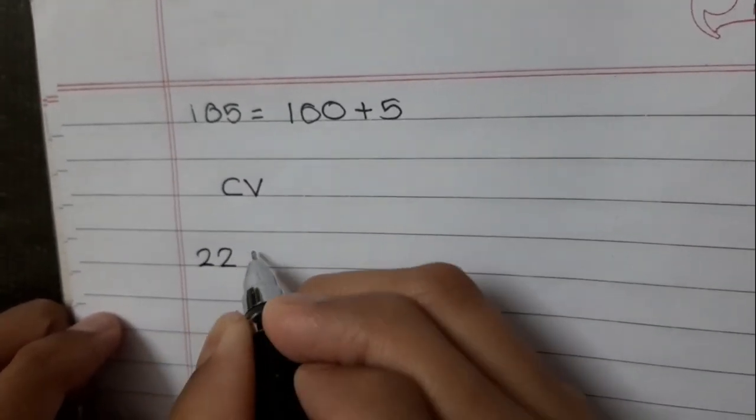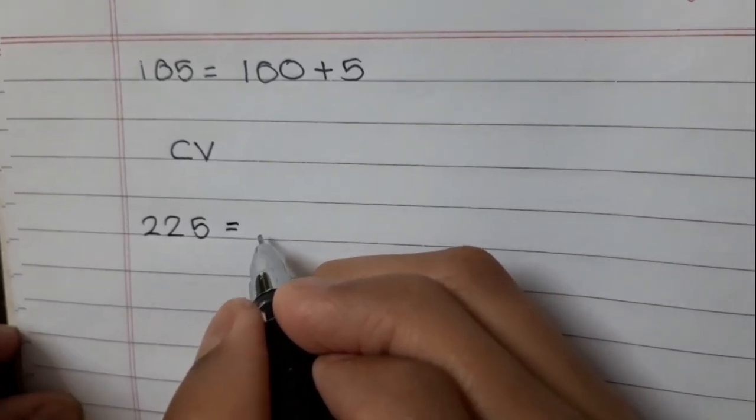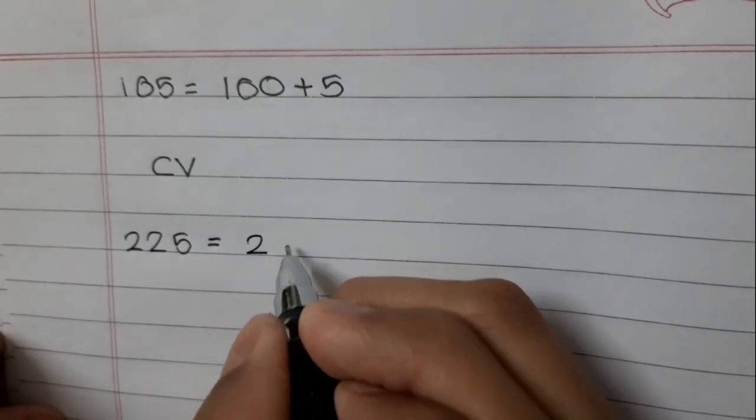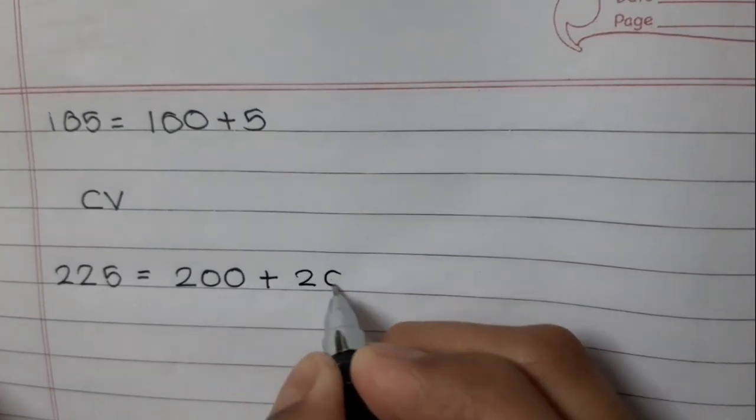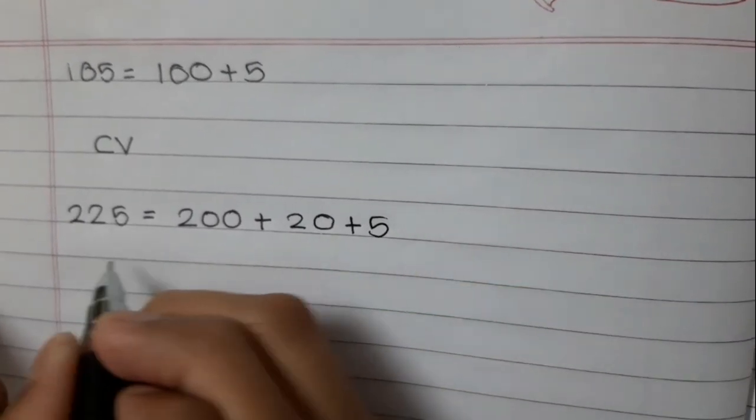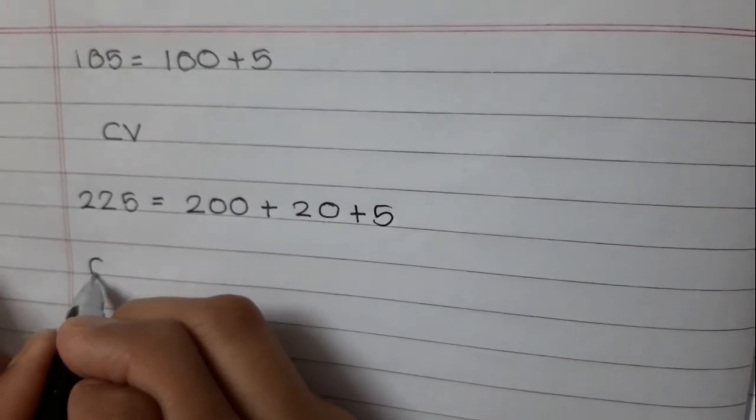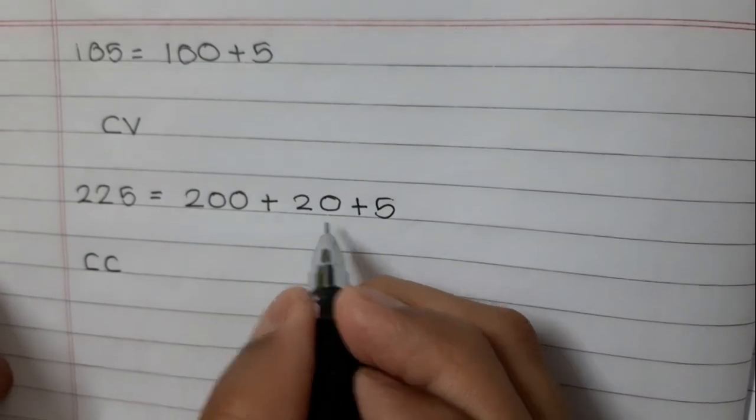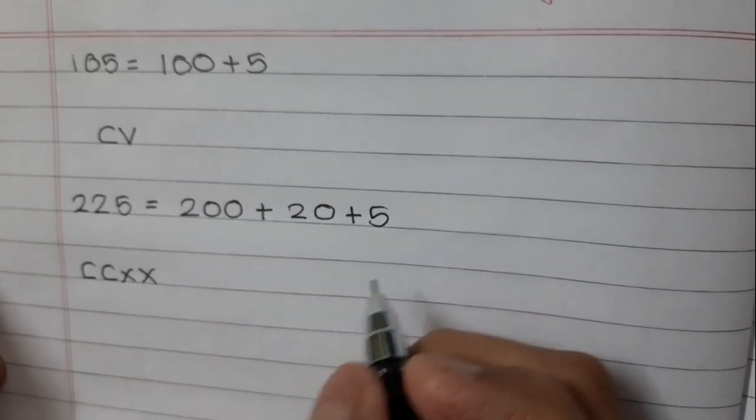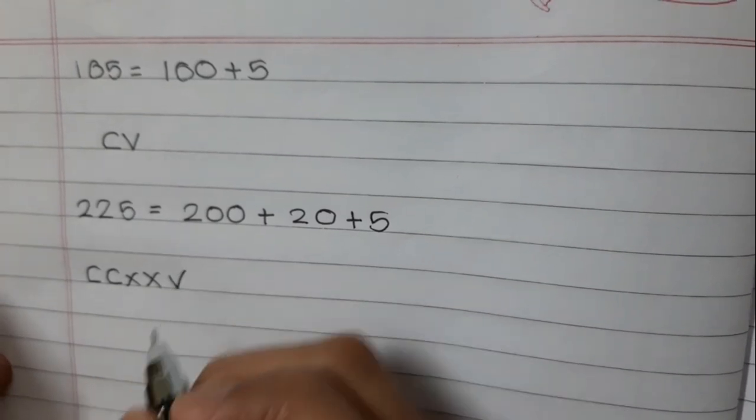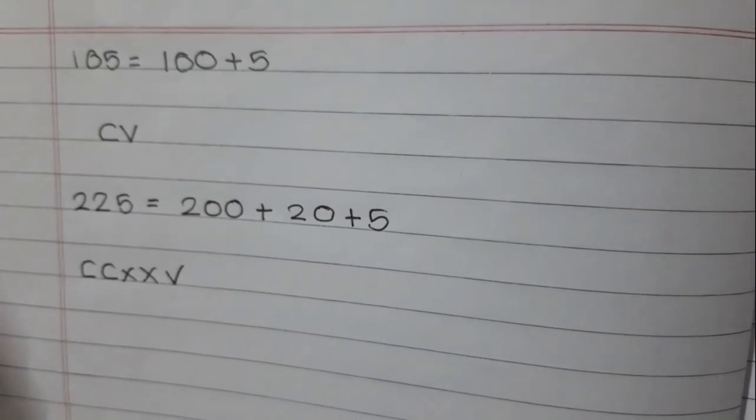Example 2: 225. 225 equals 200 plus 20 plus 5. 200 is double C, 20 is double X, 5 is V. So this is CCXXV, which equals 225.